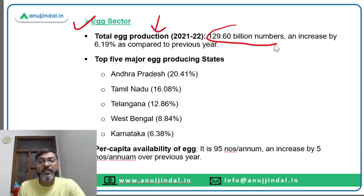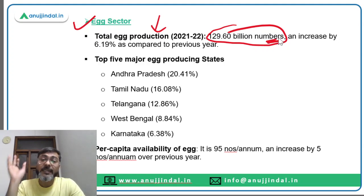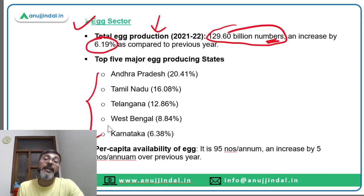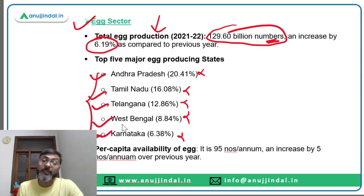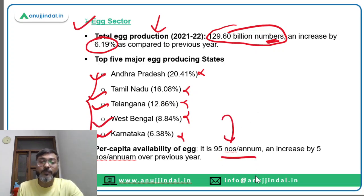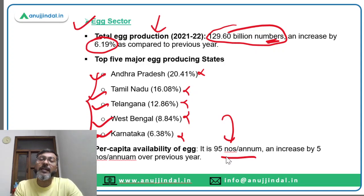Talking about the egg sector: total egg production is 129.60 billion numbers, an increase of 6.9 percent. The top five egg producing states are Andhra Pradesh, Tamil Nadu, Telangana, West Bengal and Karnataka. Per capita availability of egg is 95 numbers per annum, an increase of 5 numbers per annum over the previous year.